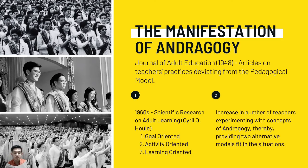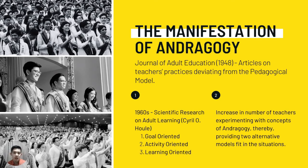In the 1960s, there was scientific research on adult learning by Cyril O. Hull, and the study found three subgroups for adult learners: goal-oriented learners, activity-oriented learners, and learning-oriented learners. This also led to an increase in teachers experimenting with andragogy, providing two alternative models fit for different situations. Neither model is actually better than the other — the pedagogical model can be used when appropriate for adult learners, and the andragogical model can also be applied for young learners, depending on the situation.